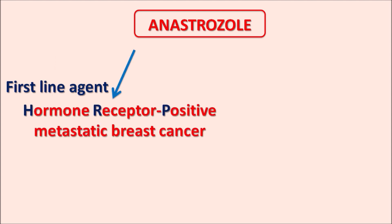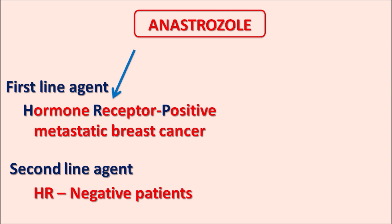As a first-line agent, anastrozole can be used in the treatment of hormone receptor positive metastatic breast cancer — in patients where breast cancer is spreading and estrogen receptors are intact and show positive response. This drug can also be used in locally advanced breast cancer, and as a second-line agent in hormone receptor negative patients as an alternative for tamoxifen, which is an estrogen receptor antagonist. When the patient is not responding to tamoxifen, anastrozole can be used as a second-line agent.